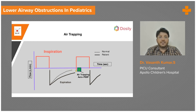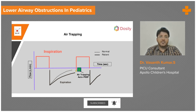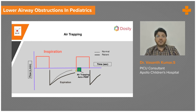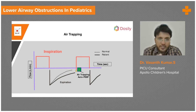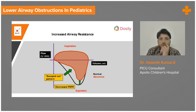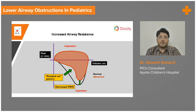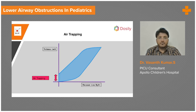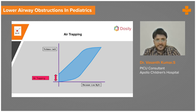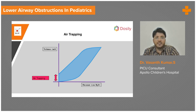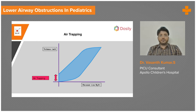In the flow-time graph, the only graph with a negative deflection, the red part is the inspiratory flow. Asthma is predominantly an expiratory problem, so expiration does not touch the baseline — some air is getting trapped, called auto-PEEP. In the flow-volume graph, inspired air goes in but expiratory air cannot reach the baseline, showing scooping which indicates airway obstruction. The pressure-volume graph also shows volume not touching the baseline, confirming air trapping and auto-PEEP.